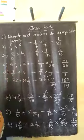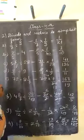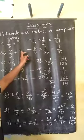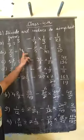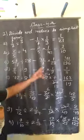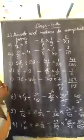Second, 2 upon 5 divided by 4. We find the reciprocal. It will be reciprocal of 1 upon 4. So we multiply 2 upon 5 into 1 upon 4.